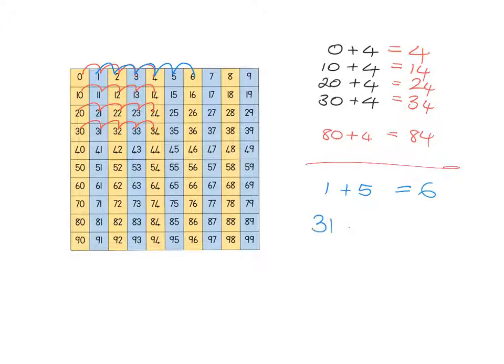So then, using this pattern idea, what would 31 plus 5 be? Well, 31 plus 5 steps, it's following the exact same pattern just in that 30s line. So you're going to get 36. And so we don't have to do any counting or anything of that nature. If we know 1 and 5 is 6, we know that 81 and 5 is 86. And seeing and knowing these repeated patterns is important.